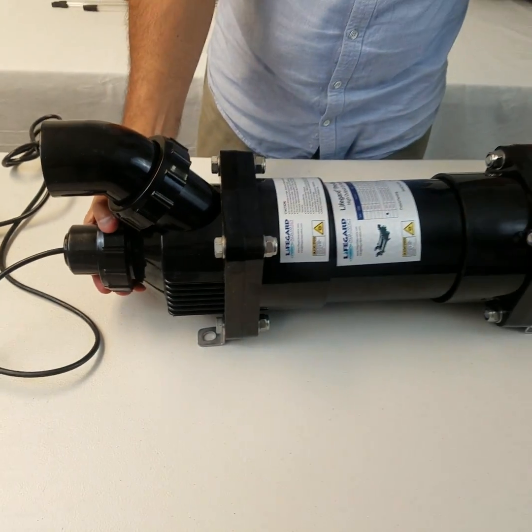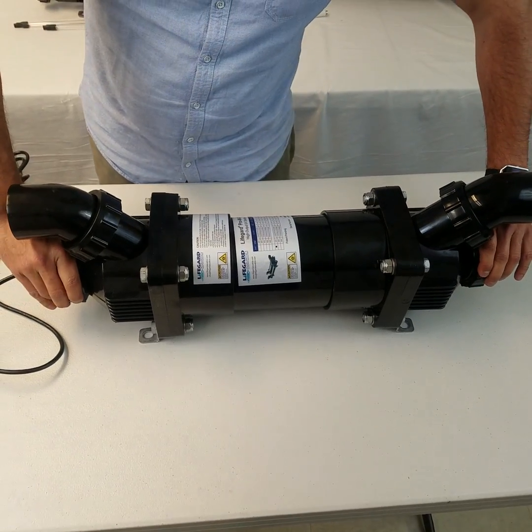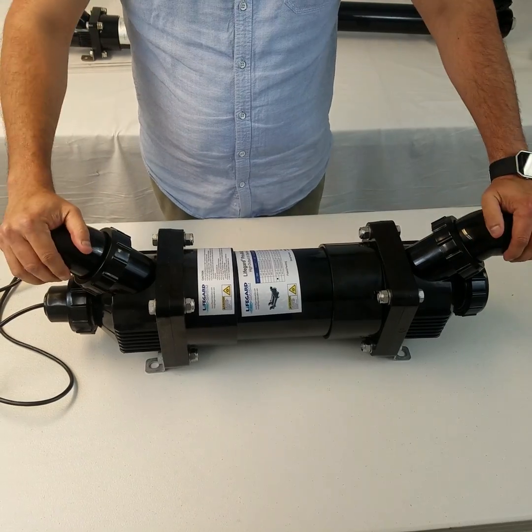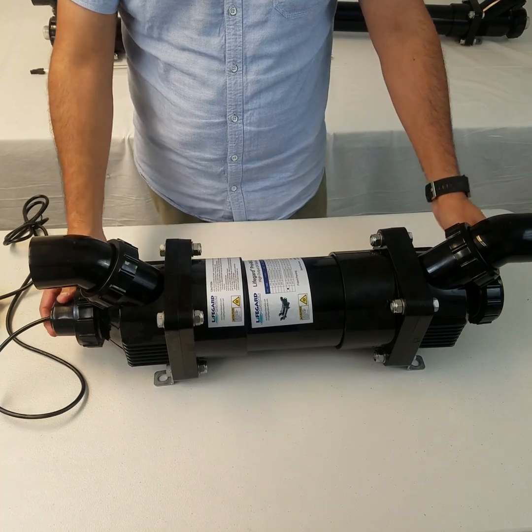There we go. Tighten both by hand, and you can use a wrench just a half an inch more, and that should tighten it. Your installation is complete. Your quartz sleeve is now sealed with the rest of the housing.